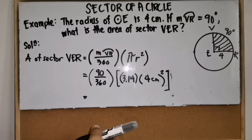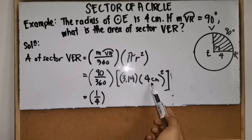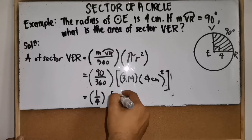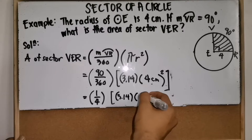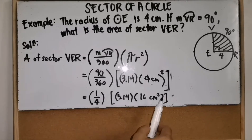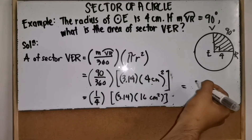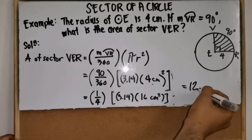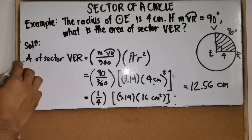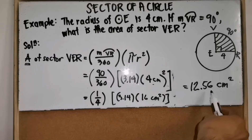Simplifying: 90 divided by 360 equals one-fourth, and 4 squared equals 16 square centimeters. Multiplying everything together: one-fourth times 3.14 times 16 equals 12.56. Don't forget the unit — since it is area, the answer is 12.56 square centimeters.